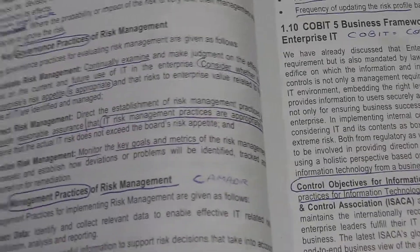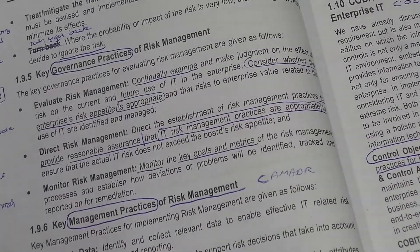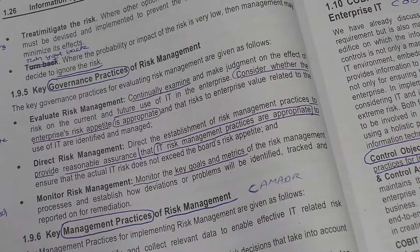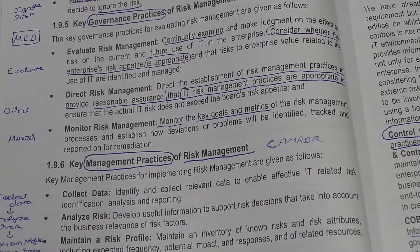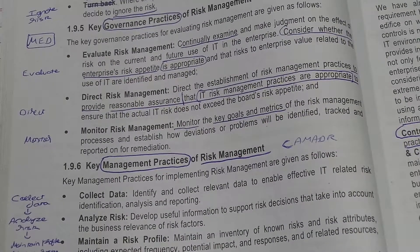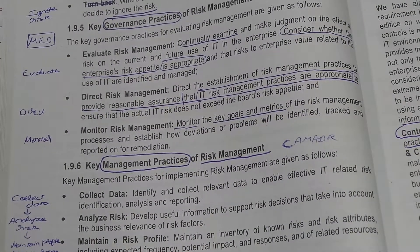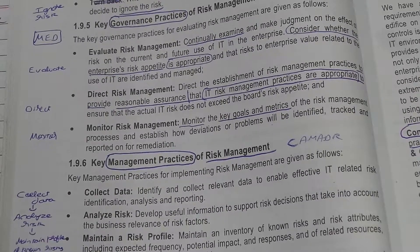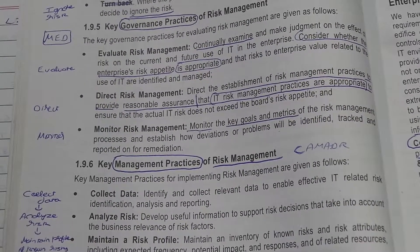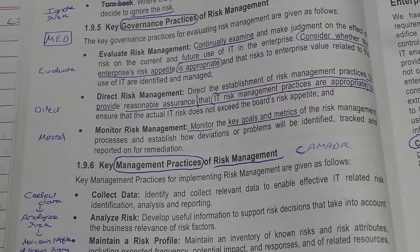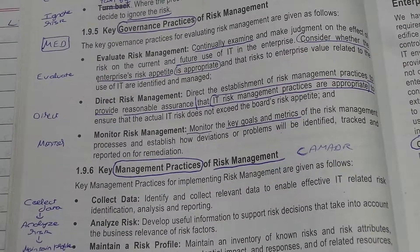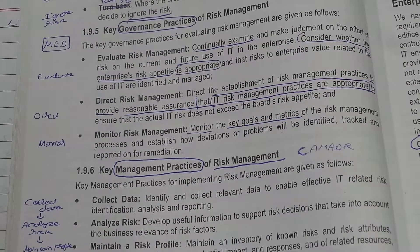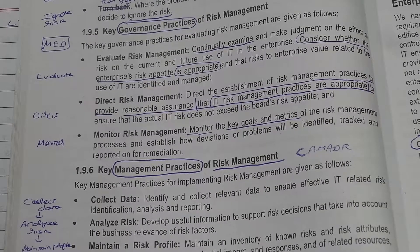The governance practices of risk management again follow the EDM framework. Evaluate what the risk level is now. Direct it to get the risk within the selected appetite — the level of risk which we want to take. Then Monitor — whether the risk is coming within that level or exceeding it.